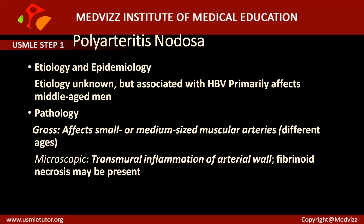The name itself tells us a lot: 'poly' means many, 'arteritis' means inflammation of arteries, and 'nodosa' refers to nodules. PAN involves small or medium-sized muscular arteries, especially at the branching points of vessels. Typically, the branching points of vessels in the kidney and heart are involved.